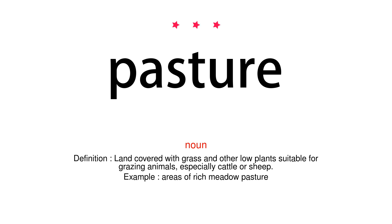Pasture. Noun. Definition: Land covered with grass and other low plants suitable for grazing animals, especially cattle or sheep. Example: Areas of rich meadow pasture.